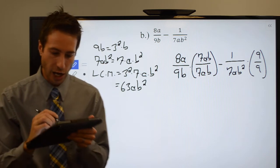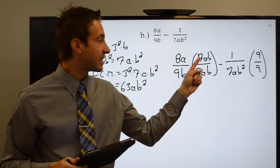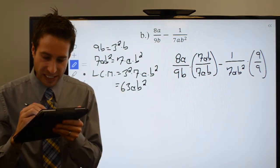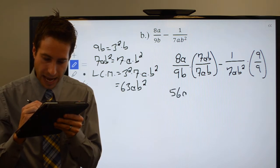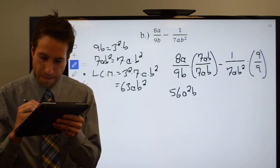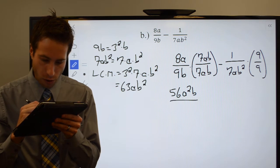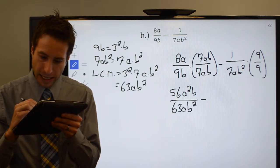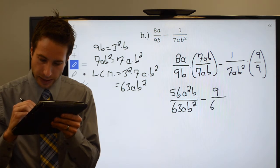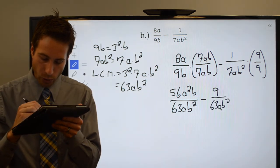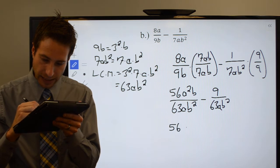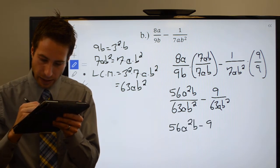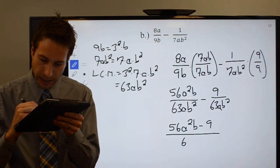Great, here we go. 8 times 7 should be 56, so I wind up with 56AB squared all over 63AB squared, which means I have 56AB squared all over 63AB squared.